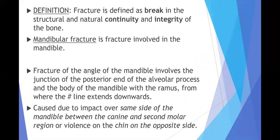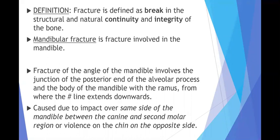To begin with the definition: fracture is defined as a break in the structural and natural continuity and integrity of the bone. Mandibular fracture is the fracture involving the mandible. To introduce the fracture of the angle of the mandible, the fracture line involves the junction of the posterior end of the alveolar process and the body of the mandible with the ramus, from where the fracture line extends downwards.